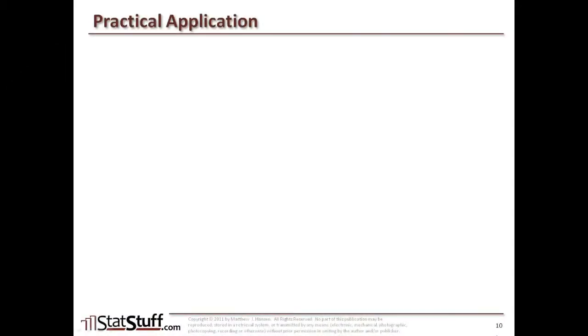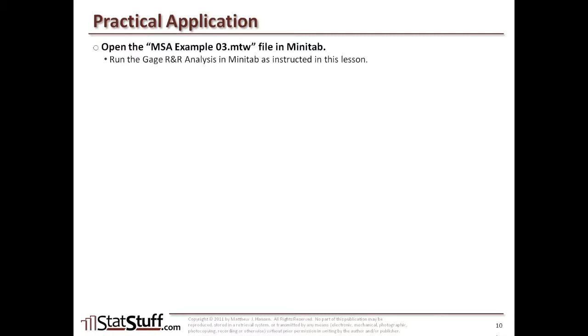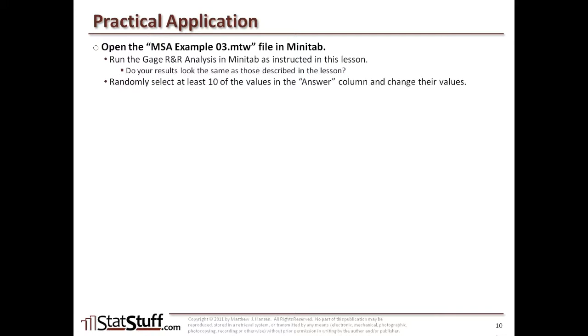Before we close this lesson, let's discuss how we can apply some of these concepts in a practical way. Open the sample file provided for this kind of analysis. If you have Minitab — at least the full version, since this is where it can be run — try to run the gauge R&R analysis in Minitab as we've shown. When you do that, you should get the same results as shown in this particular lesson.